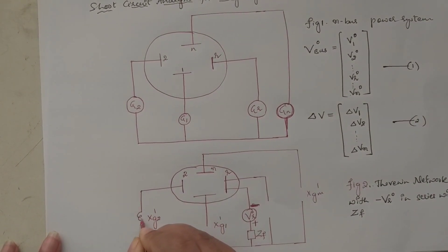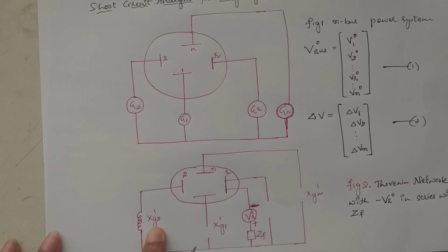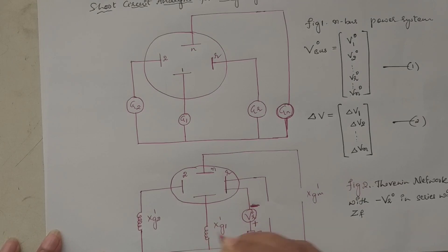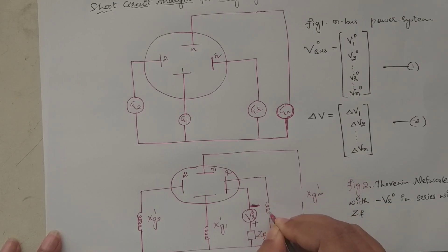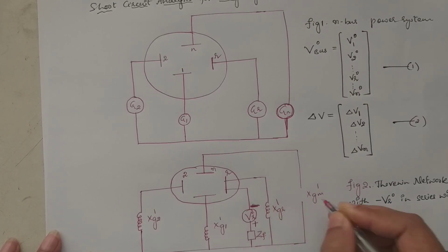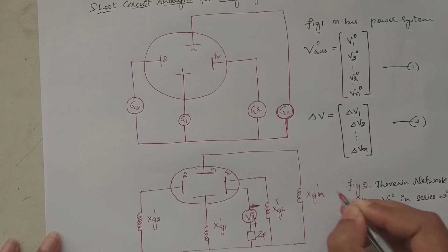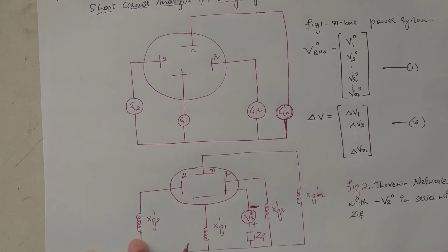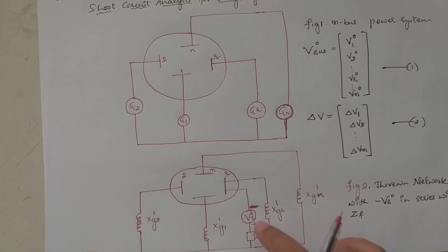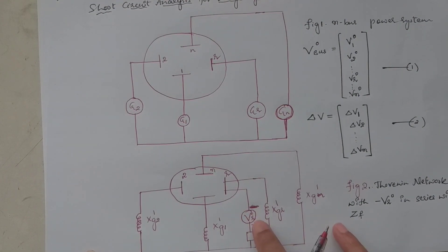The generators are replaced by sub-transient reactances: Xg1', Xg2', ..., Xgr', ..., Xgn'. The EMFs are shorted. At the r-th bus, the network includes the pre-fault voltage −Vr⁰ and the fault impedance Zf.